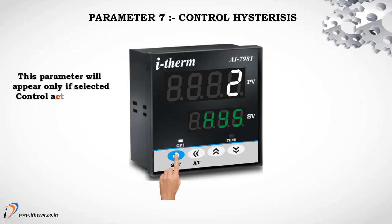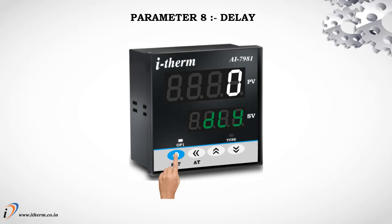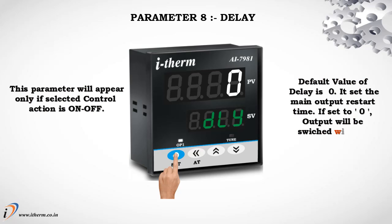Parameter 7: Control Hysteresis. This parameter will appear only if selected control action is on-off. Default value of hysteresis is 2 degrees centigrade. It sets the dead band between on and off switching of the output. Parameter 8: Delay. This parameter will appear only if selected control action is on-off. Default value of delay is 0. It sets the main output restart time; if set to 0, output will be switched without delay.